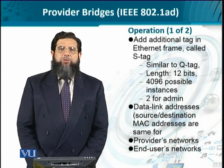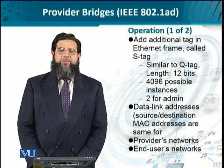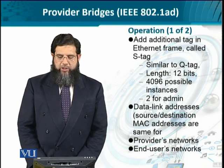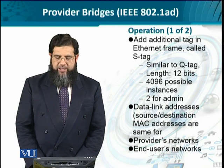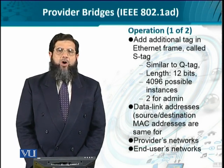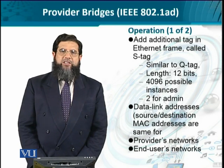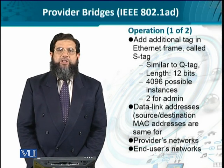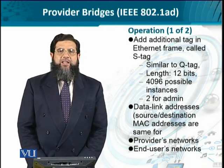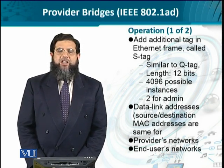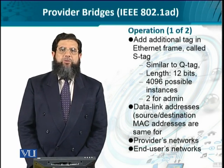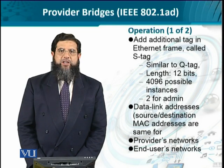The implementation of provider bridges is based on certain technological features. The first one is similar to VLAN ID. Here, an additional tag called the S-tag is introduced. It is again 12 bits in length, giving a total of 4096 different IDs, of which two are reserved for administrative purposes. Using these identifiers, multiple instances can be created from one customer network to another customer network through the user-to-network interface. The user-to-network interface is the interface between the customer network and the provider network through the bridges.